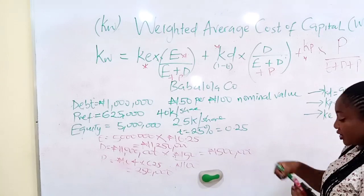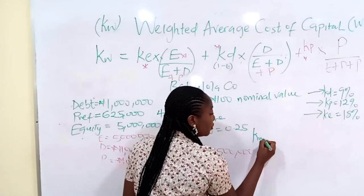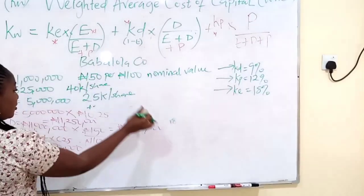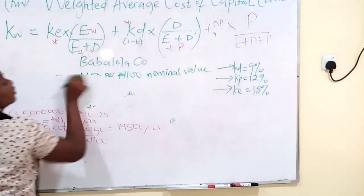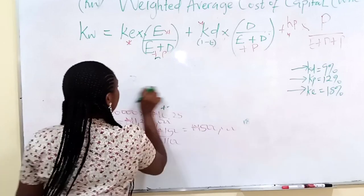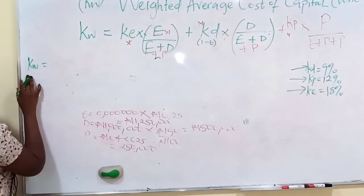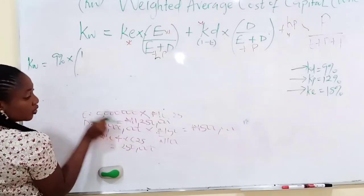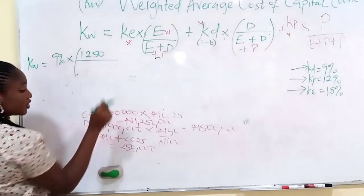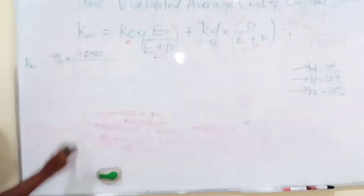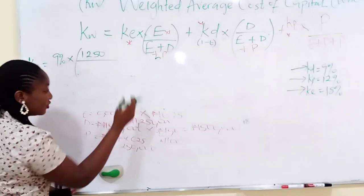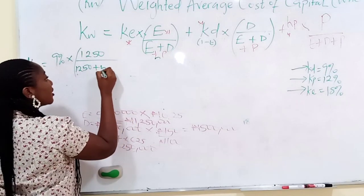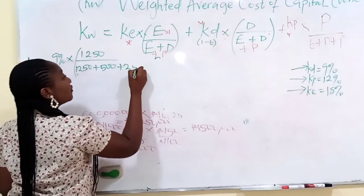Now you can estimate your WACC. Just put in all the variables. KW equals cost of equity, 18%, times equity value 1,250,000 over total value. The total value is E plus D plus P: 1,250,000 plus 500,000 plus 250,000.